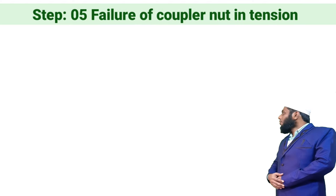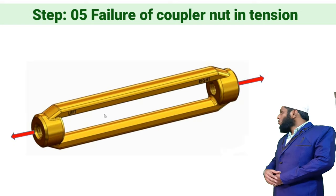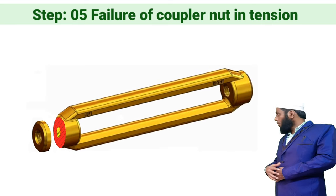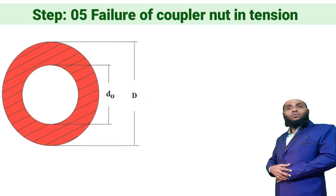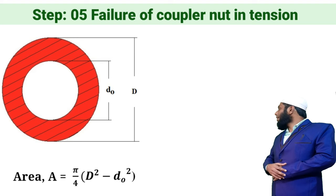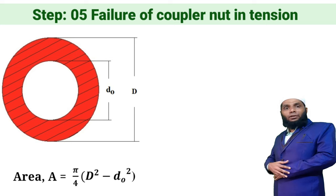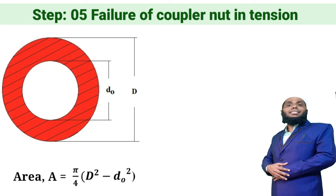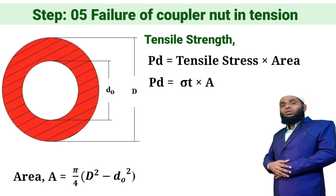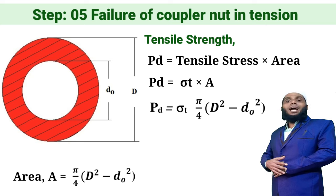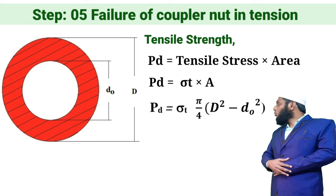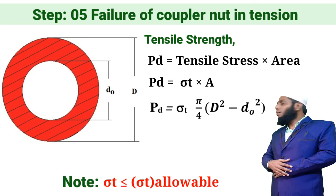Step number five is failure of the coupler nut in tension. Due to the applied tensile force, the coupler nut will fail perpendicular to the load. The area resisting this tension is: A = π/4 × (D² − DO²). Substituting this, the tensile strength of the coupler nut is: PD = σt × π/4 × (D² − DO²), where σt must be within the allowable tensile stress for the material of the coupler nut.